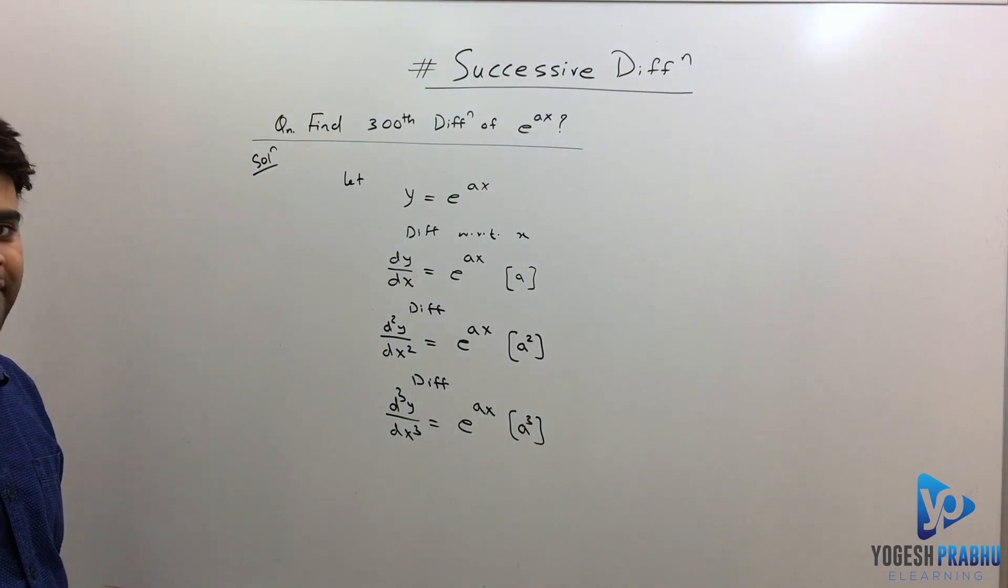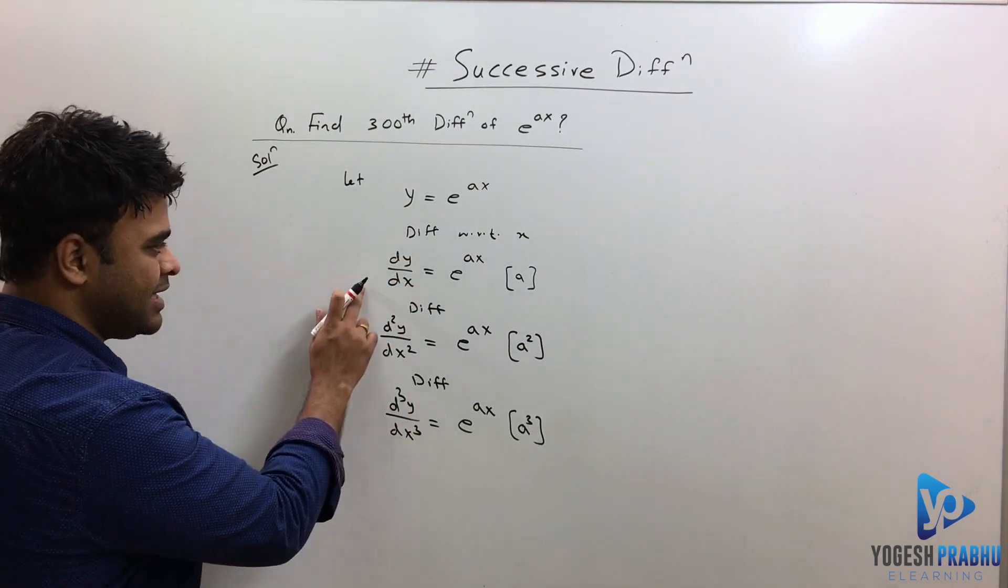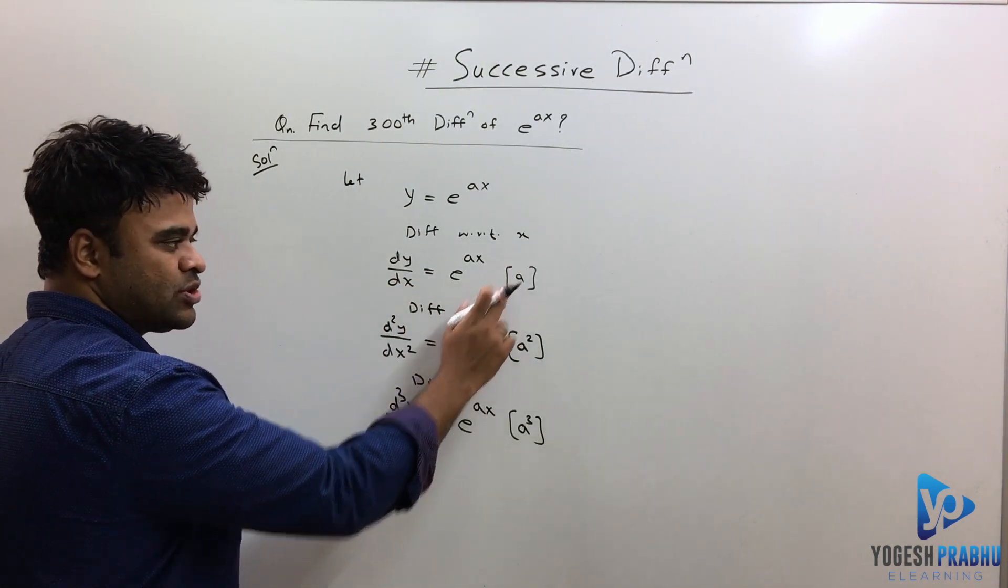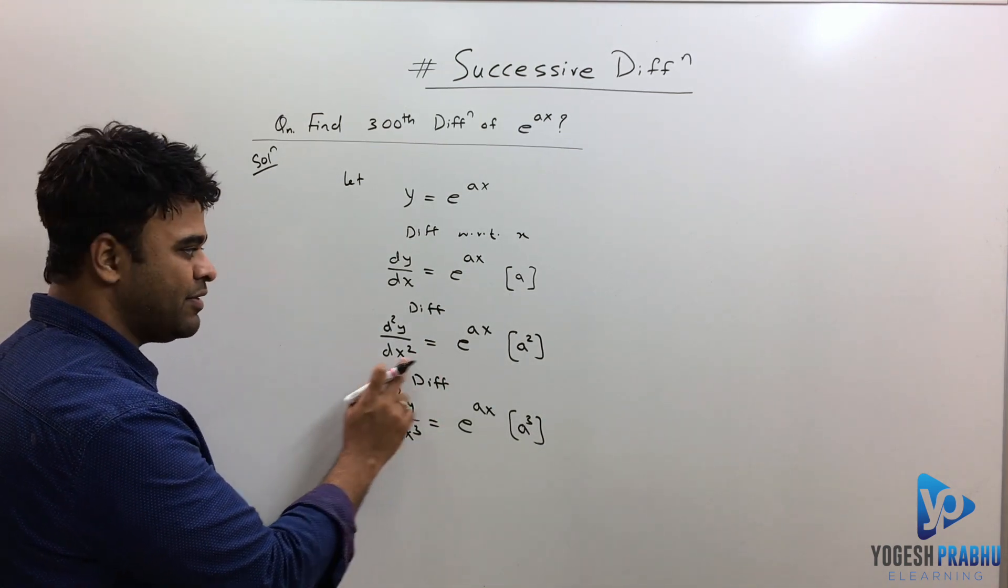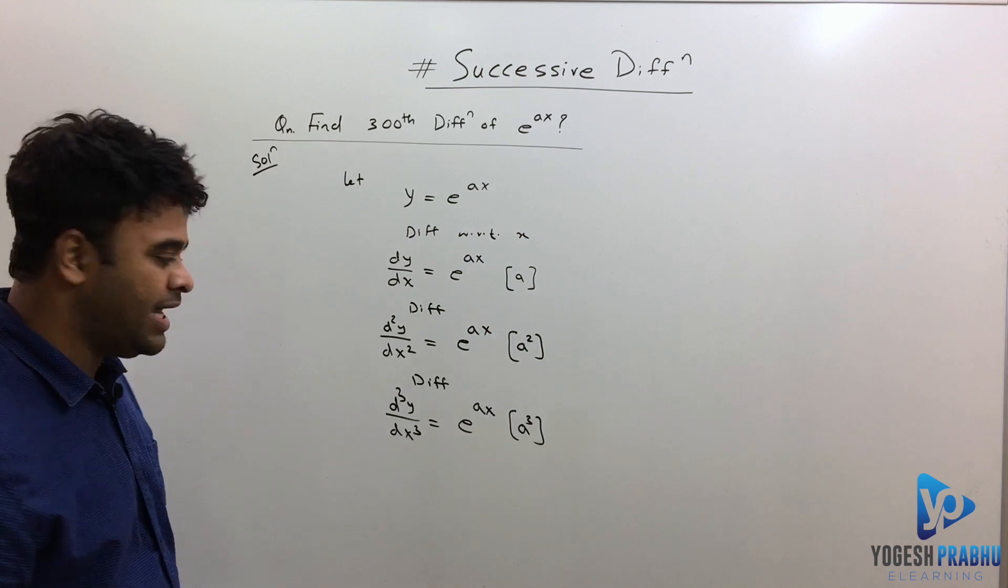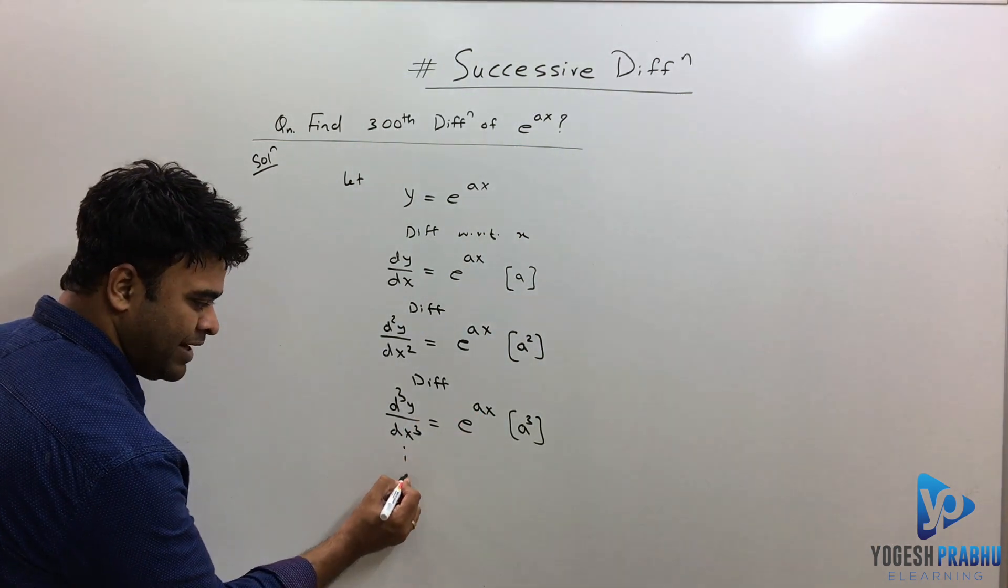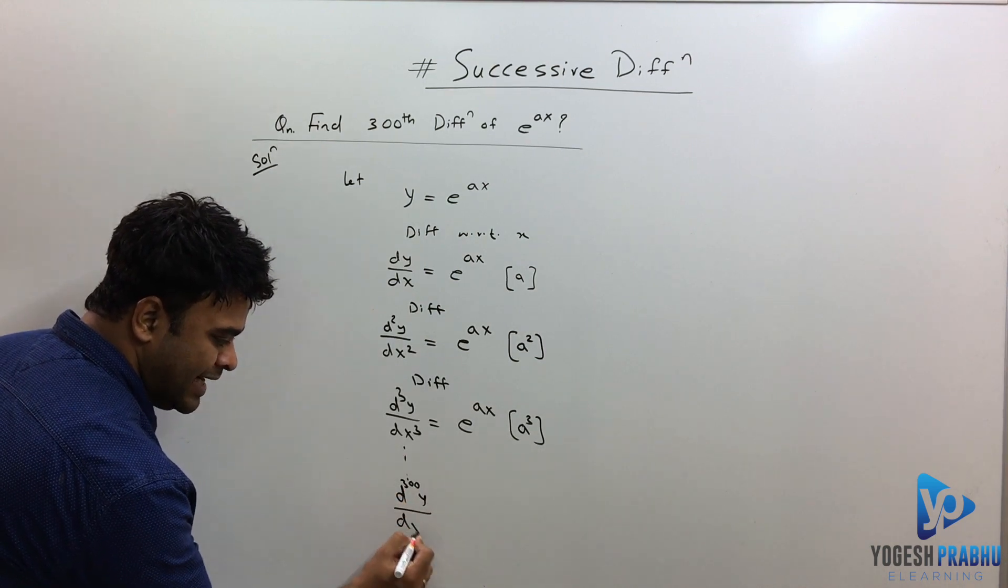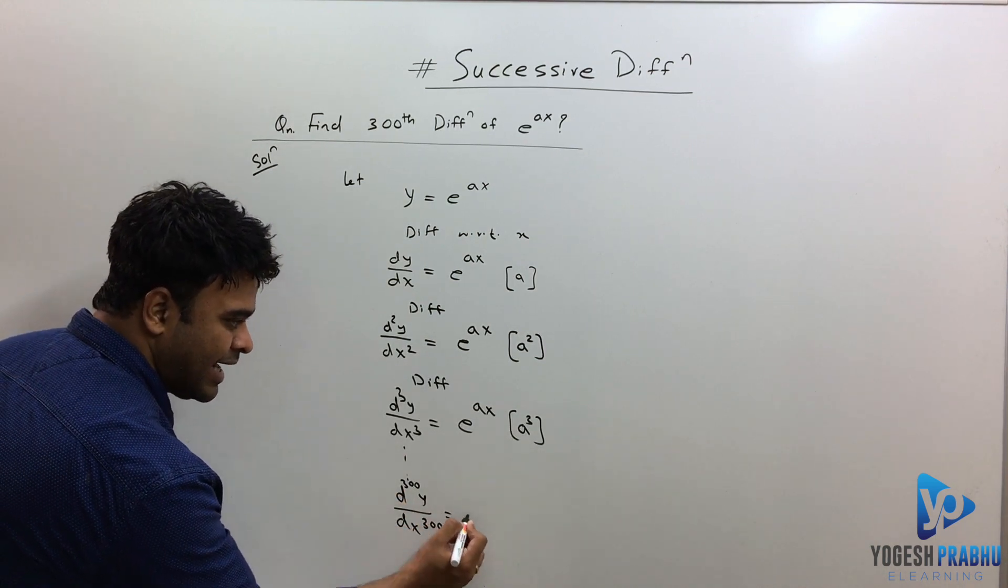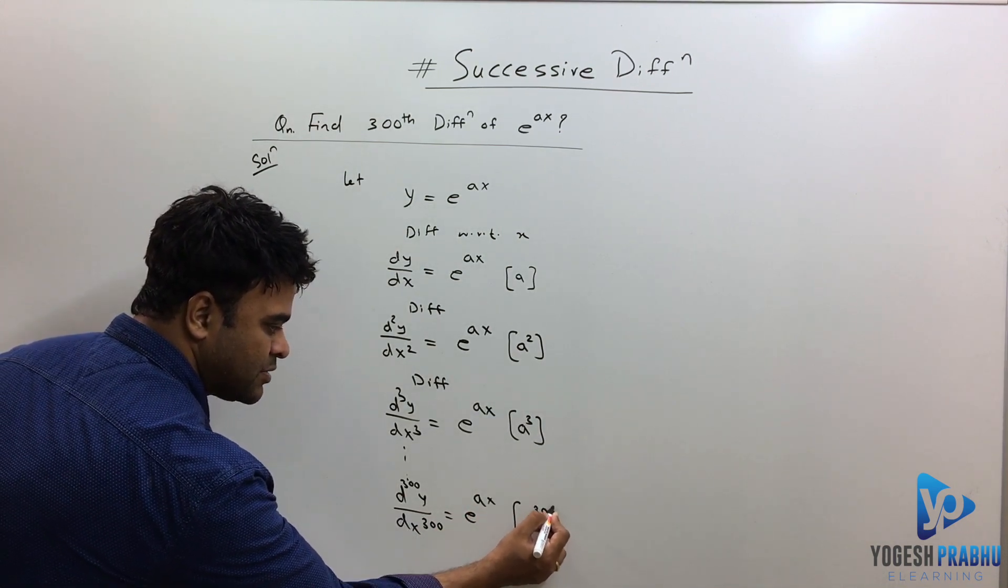Now if I ask you what is going to be the fourth derivative, you really don't have to solve this. There is already a trend over here: with the first derivative you get e raised to ax and a raised to 1, with d²y/dx² you get e raised to ax with a², and the third derivative you get e raised to ax with a³. So if I have to find the 300th derivative, d³⁰⁰y/dx³⁰⁰, that has to be e raised to ax and a raised to 300.